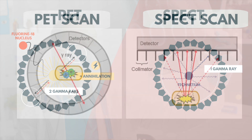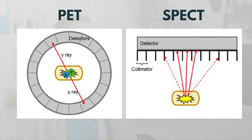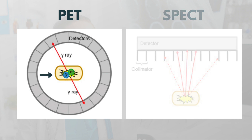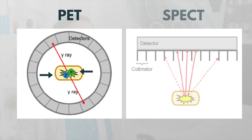Here is another picture to illustrate this. Fluorine-18 produces positrons; positrons encounter electrons and vanish, releasing two gamma rays that are detected by the camera. Technetium produces a single photon of radiation that is also detected by the camera to form an image.